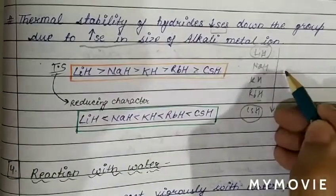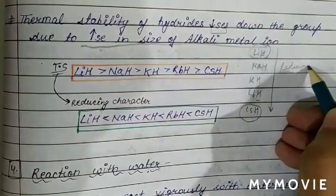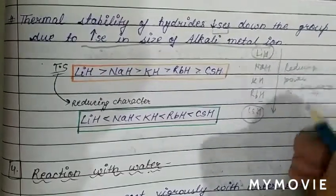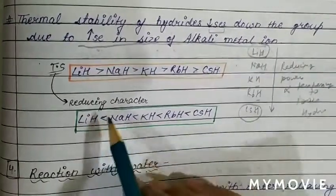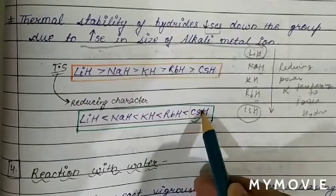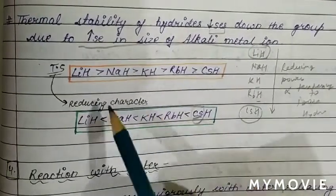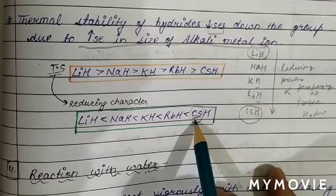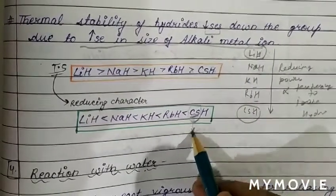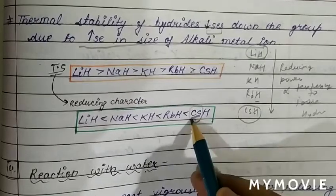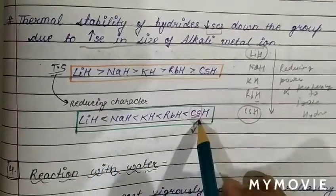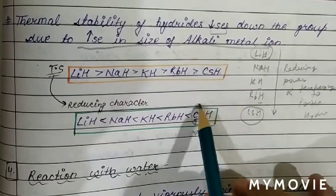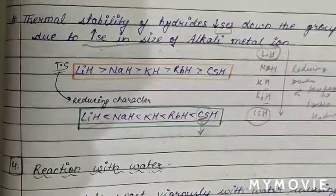Now comparing the reducing power of hydrides — reducing power is directly proportional to the tendency to lose hydrogen, or the electron-losing tendency of the cation. If the electron-losing tendency of the cation is more, the reducing power will be more, as it will easily oxidize and act as a better reducing agent. So reducing power increases as size increases, while thermal stability decreases. Reducing power is highest for cesium hydride and lowest for lithium hydride.